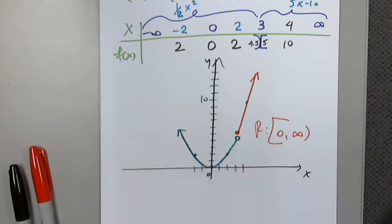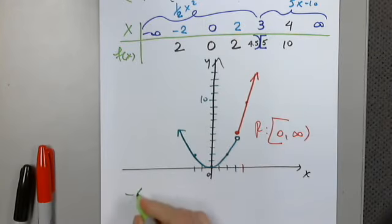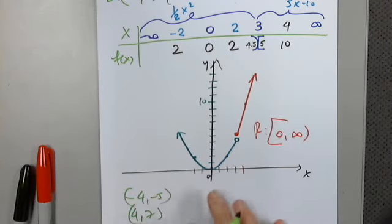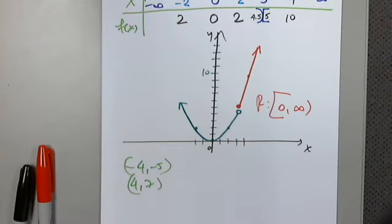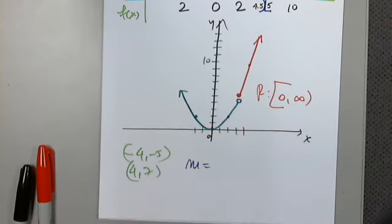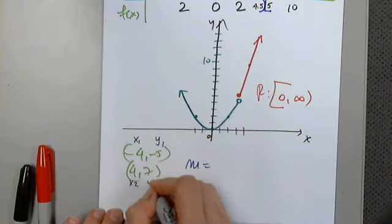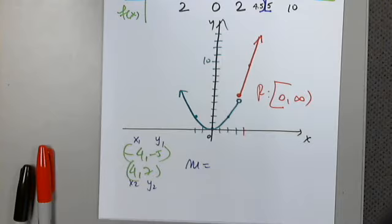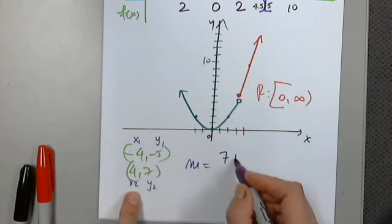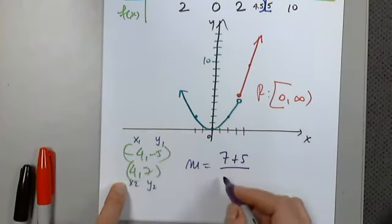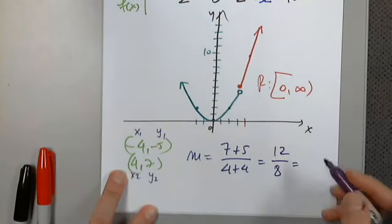Next problem, number 21: use the given conditions to write the equation of the line. We're given two ordered pairs: (−4, −5) and (4, 7). We must find the slope first. Label the points to avoid errors. The slope is (7 minus negative 5) over (4 minus negative 4), which is 12 over 8, simplified by 4 to give 3 halves.